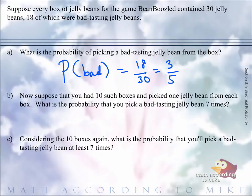Okay, part B. Now notice you have 10 such boxes and picked one jelly bean from each box. What is the probability of getting a bad jelly bean seven times?